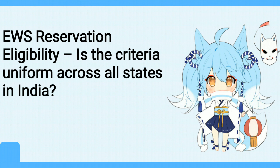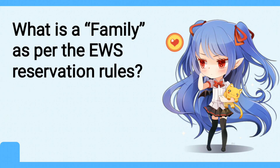Is EWS reservation eligibility uniform across all states? The criteria for EWS given by the central government are a baseline — states in India can set their own income cutoff to decide who constitutes EWS and can even exceed the income criteria set by the center. Regarding the definition of family for EWS reservation, it includes the person seeking reservation, his or her parents, siblings below the age of 18, spouse, and children below the age of 18 years. Land or property owned by the family in different locations will be clubbed while checking eligibility.